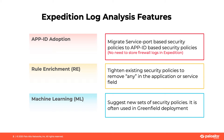The second feature is Rule Enrichment. It's often used when you want to tighten the existing security policy to remove any in the application or service field. For example, you might have a security policy that allows from host A to host B on any applications and any service port. By enabling Rule Enrichment, Expedition can analyze the actual firewall logs and find out which applications and service ports are really required, so you can refine the security policy with specific applications and service ports only. Expedition will also list the new security policy with the port as application default if the found service port matches the application default ports.